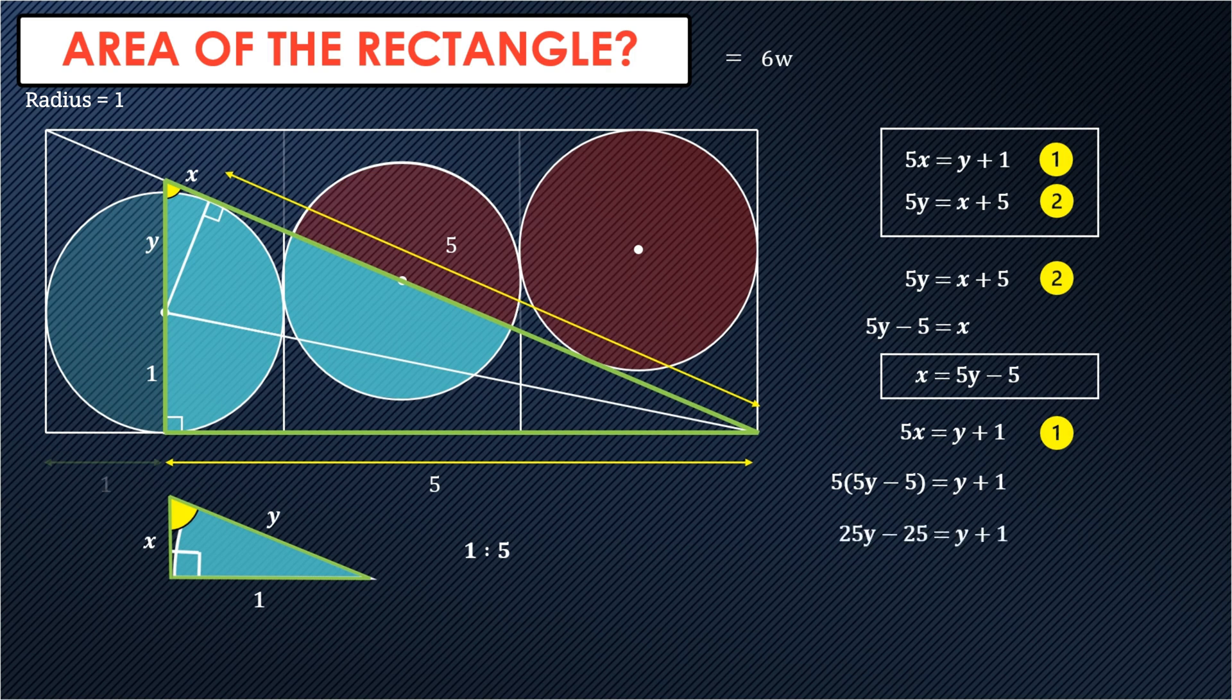Expand the bracket. And then we can subtract Y from both sides and add 25 to both sides. 24Y equals 26. And therefore Y has a value of 26 over 24 or 13 over 12.